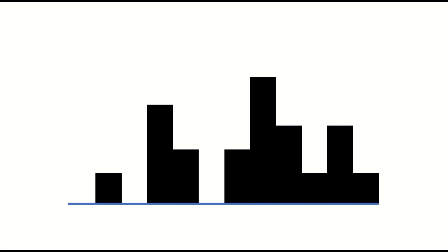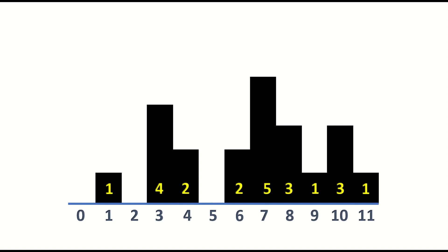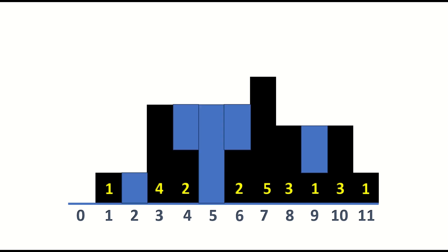Now let's quickly understand the problem statement. We are given a certain elevation map, which we can think of in the form of one-dimensional buildings or towers represented as an array ranging from indexes 0 to 11, meaning we have 12 different buildings of certain heights. Whenever there is a rainfall, these buildings will trap certain units of water, and this is exactly what we need to compute.